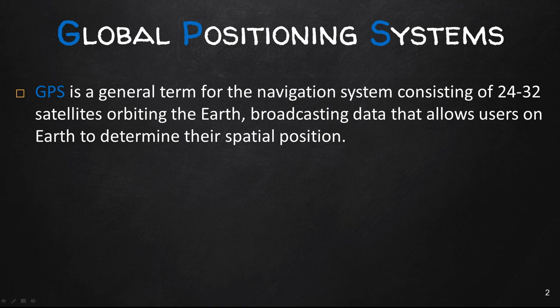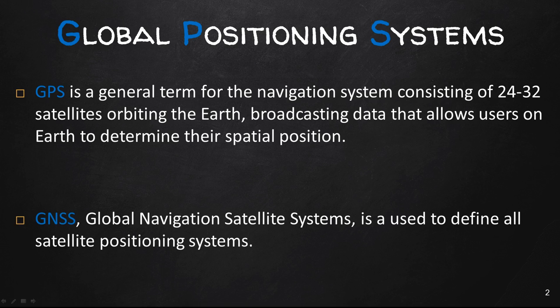GNSS, or Global Navigation Satellite Systems, is used to define all the satellite positioning systems in the world that are used by various governments or countries. GNSS is comprised of GPS, which is in the United States, GLONASS in Russia, Galileo in the European Union, just to mention a few. Your readings will discuss the other countries' satellite systems, but for our purposes GPS is the most common one we are going to be dealing with in this class.